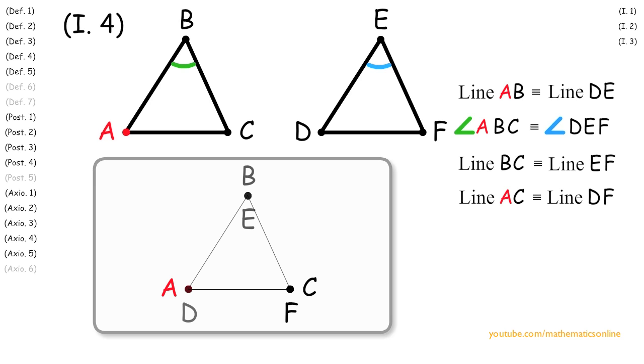So now the whole triangle ABC coincides with the triangle DEF, so by Axiom 4, triangle ABC is congruent to triangle DEF.